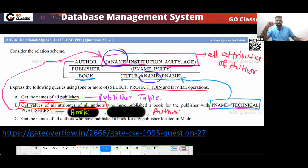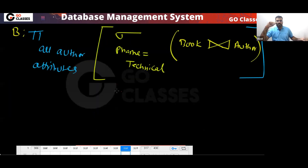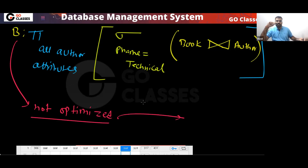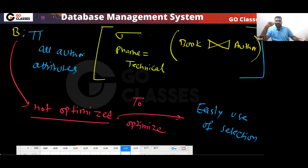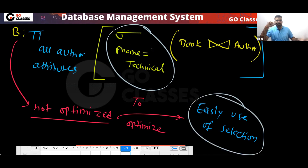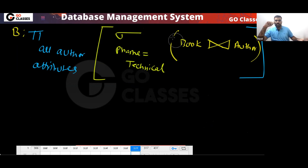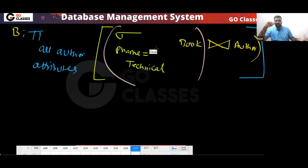Is this query optimized? No, this query is not optimized. To optimize it, you apply early use of selection. By pushing the selection on p_name = 'Technical' earlier — directly on the Book table before the join — you get an efficient, optimized query.